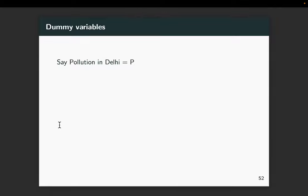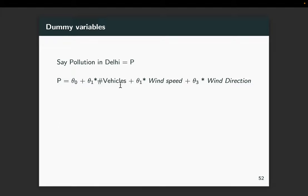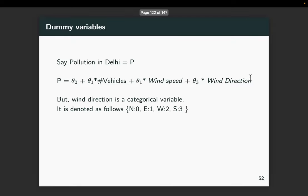Let us take a concrete example. We want to model the pollution in New Delhi as a linear function of certain baseline pollution, number of vehicles, wind speed, and wind direction. Importantly, wind direction is a categorical variable. Let's say we have four kinds of wind directions: north, east, west, south. Numerical methods and libraries like scikit-learn cannot directly use strings, so we need to encode them as real numbers. The first question is: is it okay to encode north as 0, east as 1, west as 2, south as 3 — assigning numbers 0 to k-1?